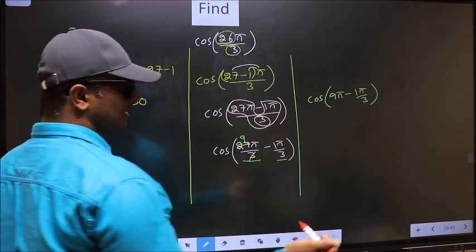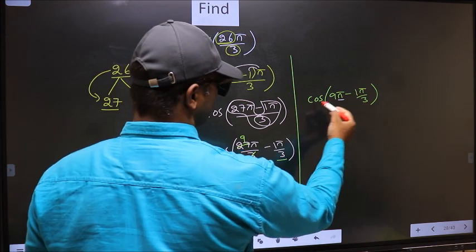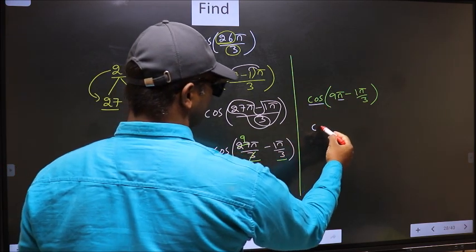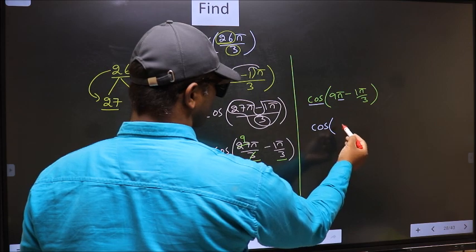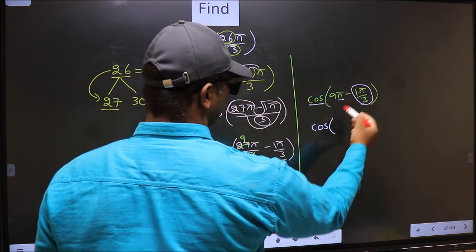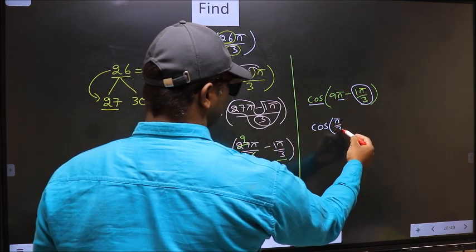Next, here we have π, so cos is not going to change. It will remain cos. And inside, we get this angle, π by 3.